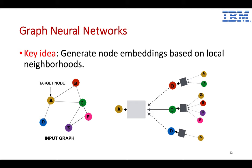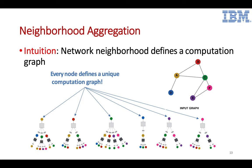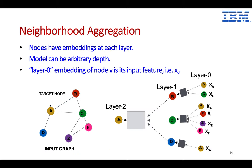In graph neural networks, the key idea is to generate node embeddings based on local neighborhood information. As shown on the left-hand side, node A is our target node. To learn its embedding, we use context information from neighbors B, C, D. B's neighborhood is A and C. This defines a unique computational graph for each node. In layer one, each node has its own initial attributes, which carry important information. In each subsequent layer, we define an aggregation function to aggregate information from the previous layer and generate a new embedding for the current node.